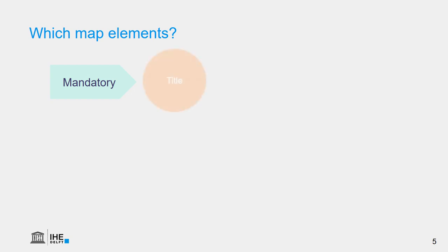Which elements do we need to put on a correct map? It is mandatory to use a title on a map if the map is used stand-alone. If we want to include the map as a figure in a report or a scientific paper, we can put the title in the caption. Also, the title should not contain the word map, because it should be clear for the audience that they are looking at a map.